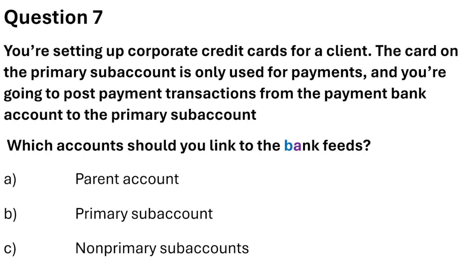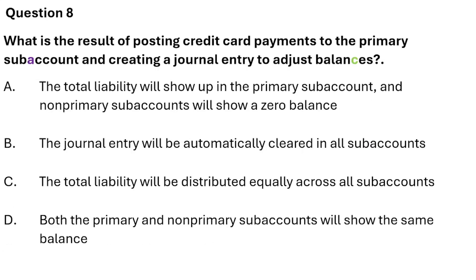Question 8: What is the result of posting payments to the primary sub account and creating a general journal entry to register balances? The options are: the total liability will show up in the primary sub account and non-primary accounts will show a zero balance; or the general entry will be automatically cleared in sub accounts so the liability is distributed equally. The correct answer is option A: the total liability will show up in the primary account and non-primary sub accounts will show a zero balance.